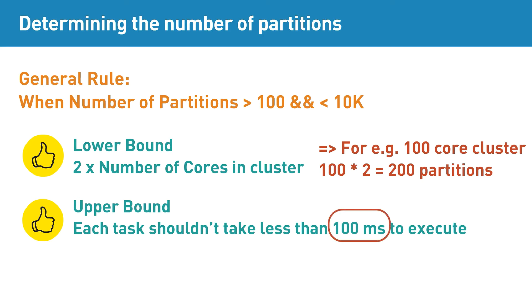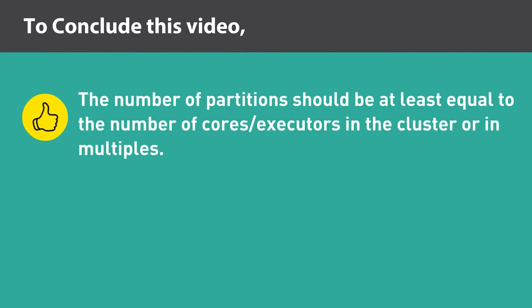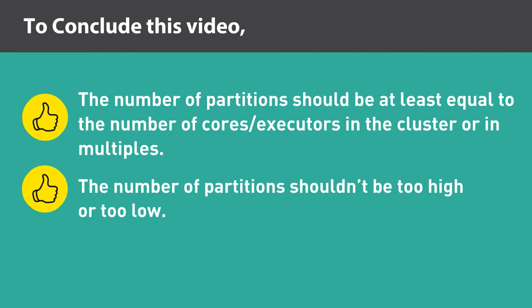Why the 100-millisecond cutoff? If each task completes very quickly in less than 100 milliseconds, it means the partition data is too small and the application is spending extra time scheduling tasks rather than leveraging the benefits of concurrency. To conclude, the number of partitions should be at least equal to the number of cores in the cluster, or in multiples. The number of partitions shouldn't be too high or too low.